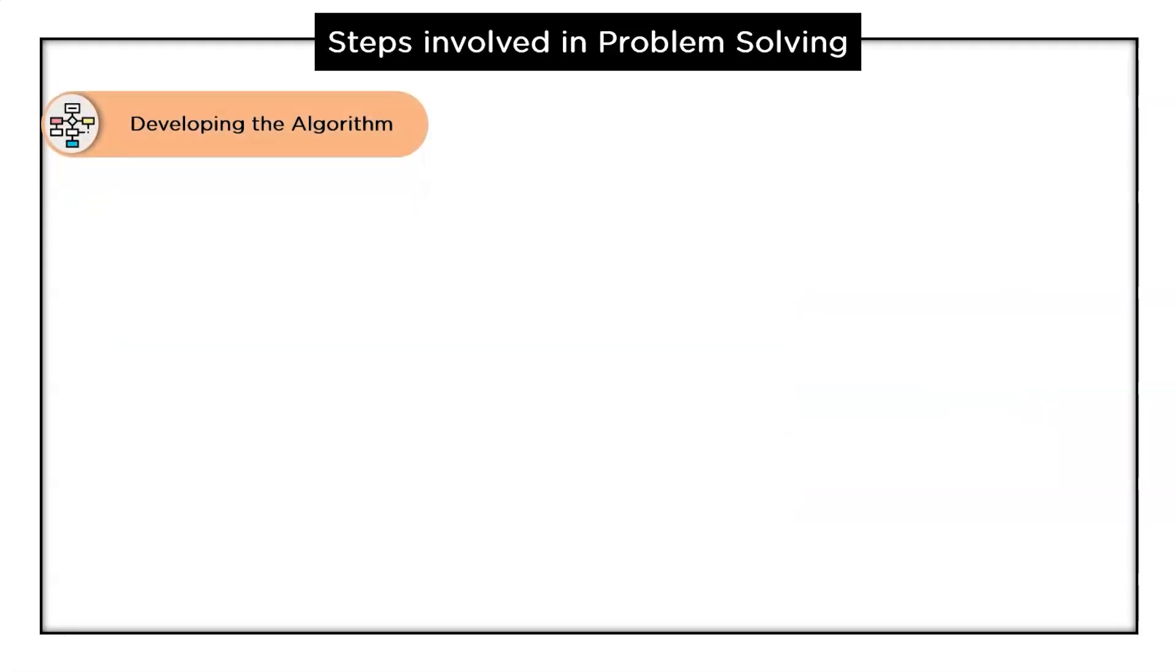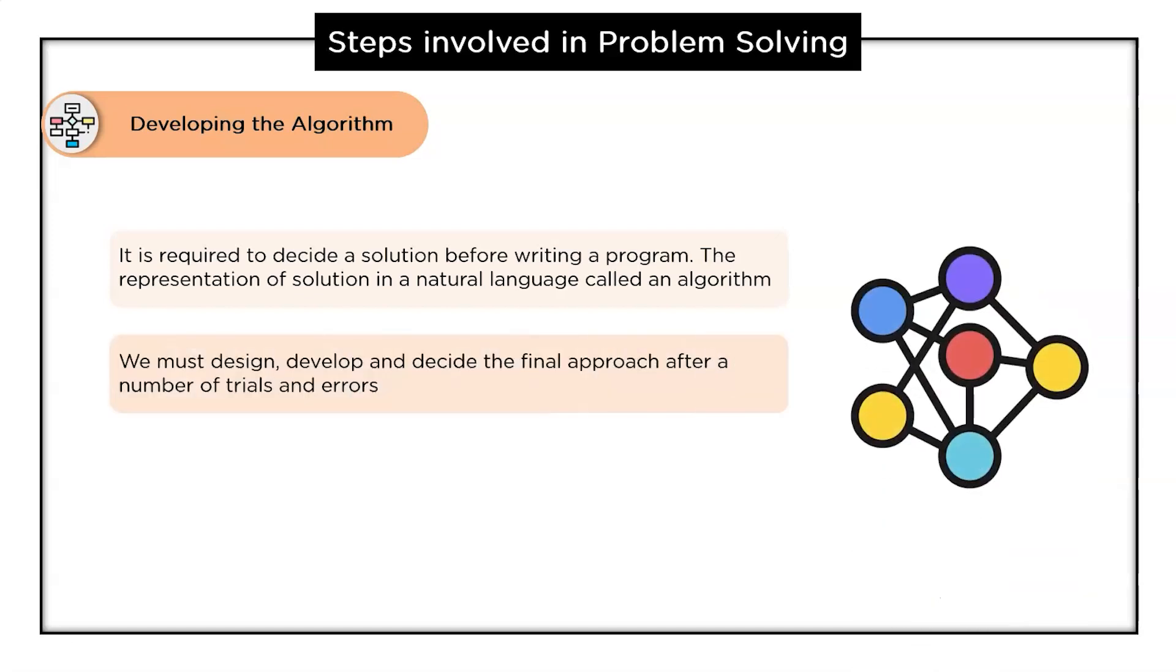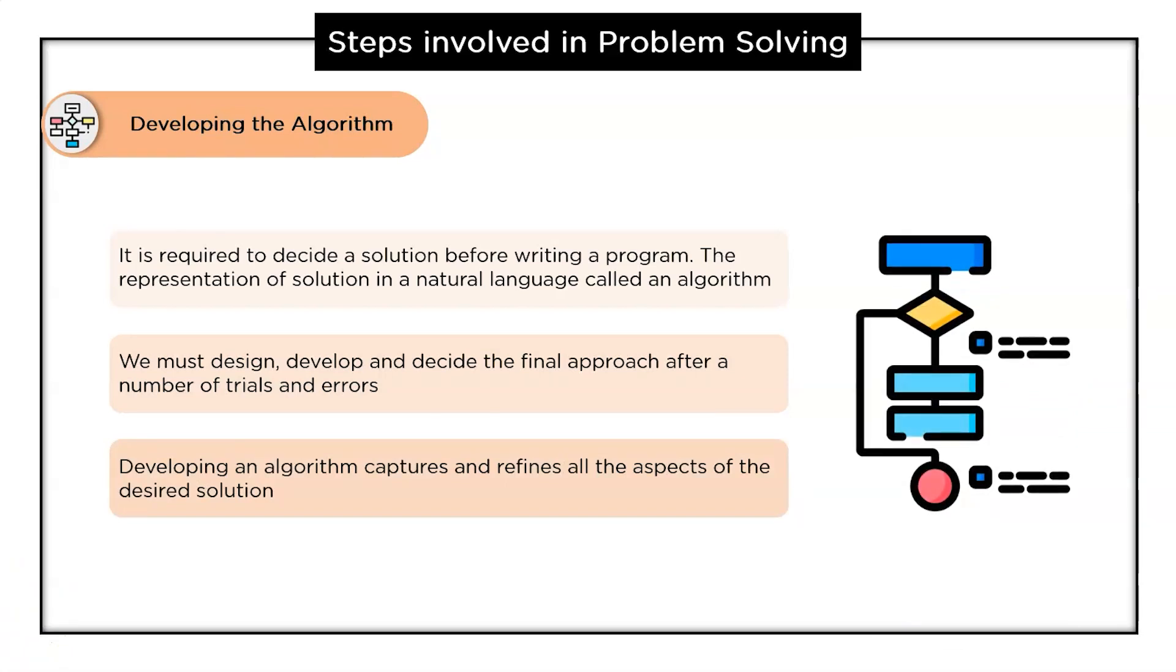The next step is developing the algorithm. Before you are ready to solve a problem it is required to decide a solution before writing the program. The representation of the solution in natural language is called an algorithm. We must design, develop and decide the final approach after several trials and errors before actually writing the final code. Developing an algorithm captures and refines all the aspects of the desired solution and can solve the problems very easily.